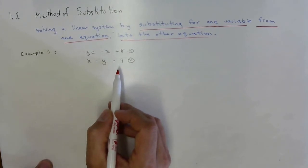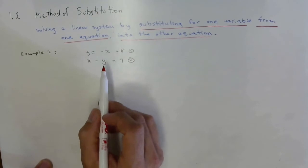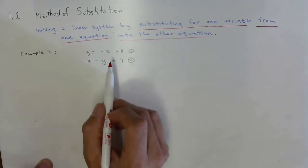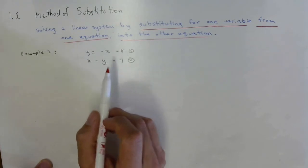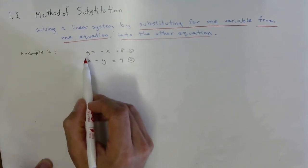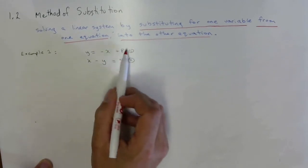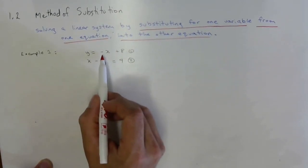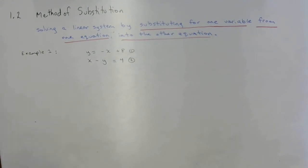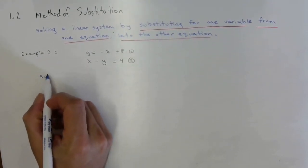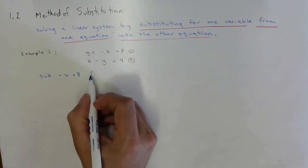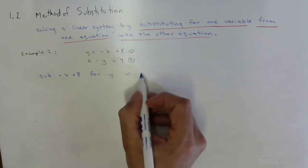Here's what I'm going to do: I need to look at both equations and see if I know what one of the variables equals. I look at equation 1 and I see y by itself on the left — that means I know y equals negative x plus 8. So I'm going to substitute negative x plus 8 for y in equation 2.